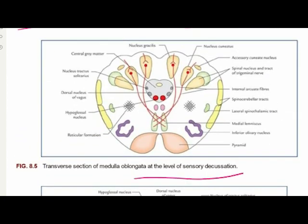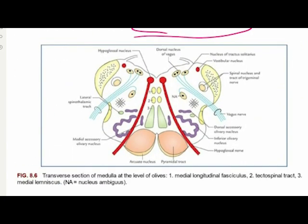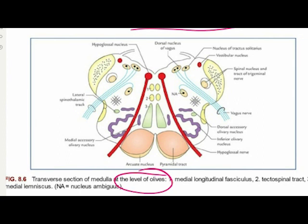The transverse section of the medulla at the level of the sensory decussation shows the central gray matter containing the hypoglossal nucleus, the dorsal nucleus of the vagus, and the nucleus of the tractus solitarius. The hypoglossal nucleus occupies the ventromedial position close to the midline. At the level of the olives, from dorsal to ventral, two prominent structures are the inferior cerebellar peduncle and the inferior olivary nucleus.